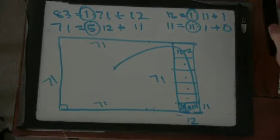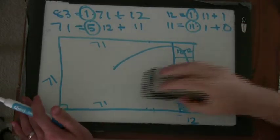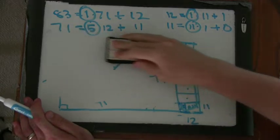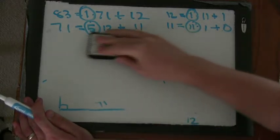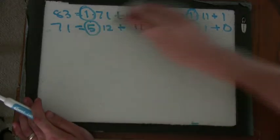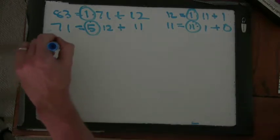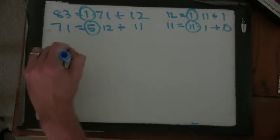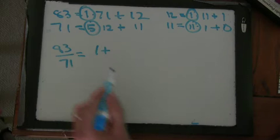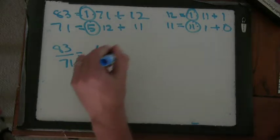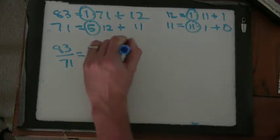So now instead of looking at the squares, we're going to look at a continued fraction for 83 over 71. And we're going to see if we see any connection with the Euclidean algorithm. So 83 over 71 equals 1 plus how much over 71? 12 over 71.